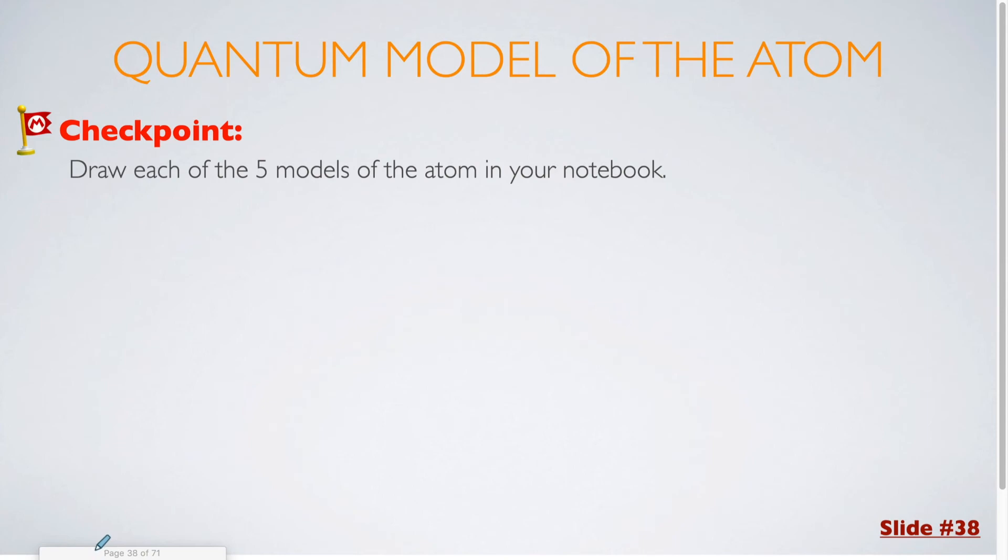For our next checkpoint question, I would like you to draw the five models of the atom within your notebook, and they'll be very similar to what you just saw on the previous slide. First up, we have Dalton's model. For Dalton's model, you can just draw it as a circle or a shaded-in circle, signifying that there are no subatomic particles making it up.